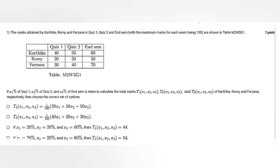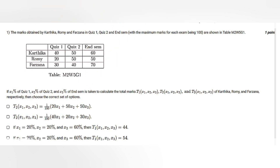Now let's start the Week 5 graded assignment. The first question is that the marks obtained by Kartika, Rumi, and Farzana in Quiz 1, Quiz 2, and End Semester are shown in a table. In Quiz 1, Kartika obtained 40; Quiz 2, Kartika obtained 50; End Semester, 60. Rumi obtained 20, 50, and 50. Farzana obtained 30, 40, and 70. If x1 percent of Quiz 1, x2 percent of Quiz 2, and x3 percent of End Semester is taken to calculate the total marks T1, T2, and T3 of Kartika, Rumi, and Farzana respectively, choose the correct option.